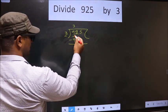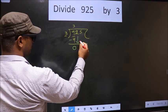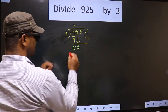Now you subtract 9 minus 9, which is 0. Now you bring down the beside number, so 2 down. This is where the mistake happens.